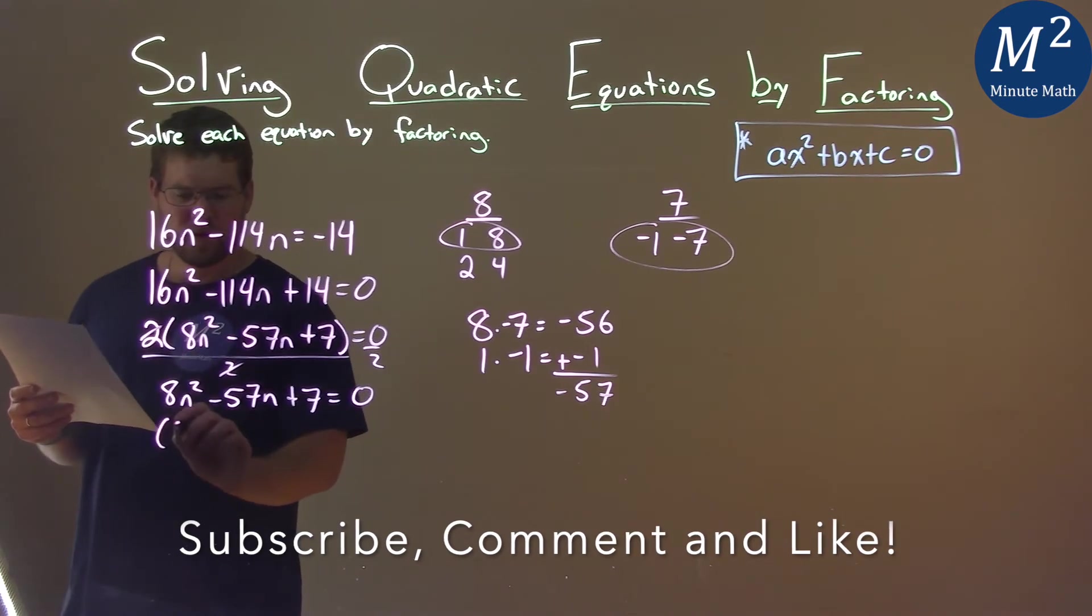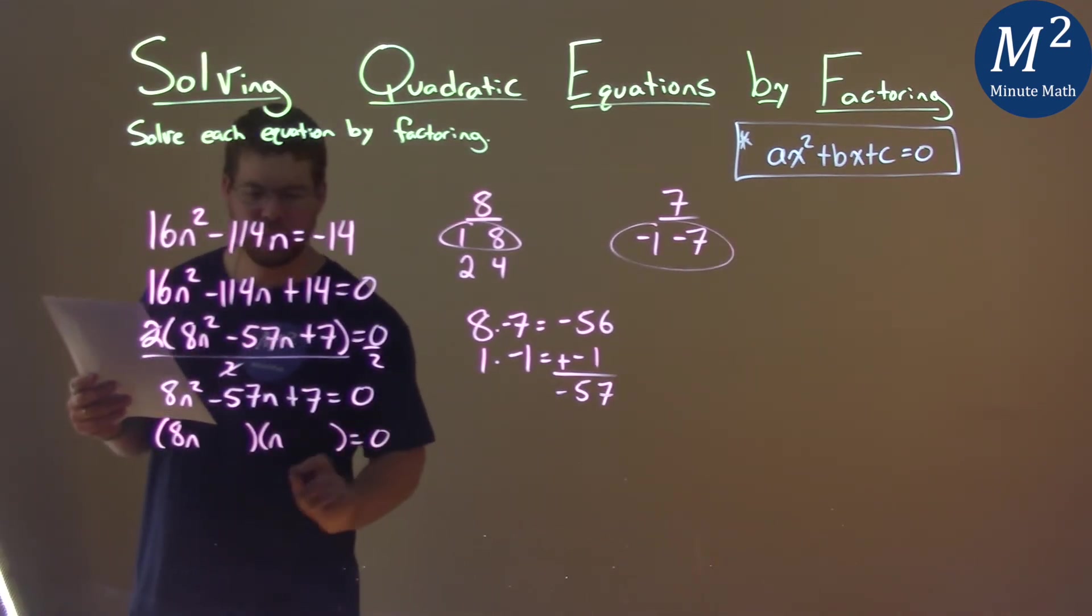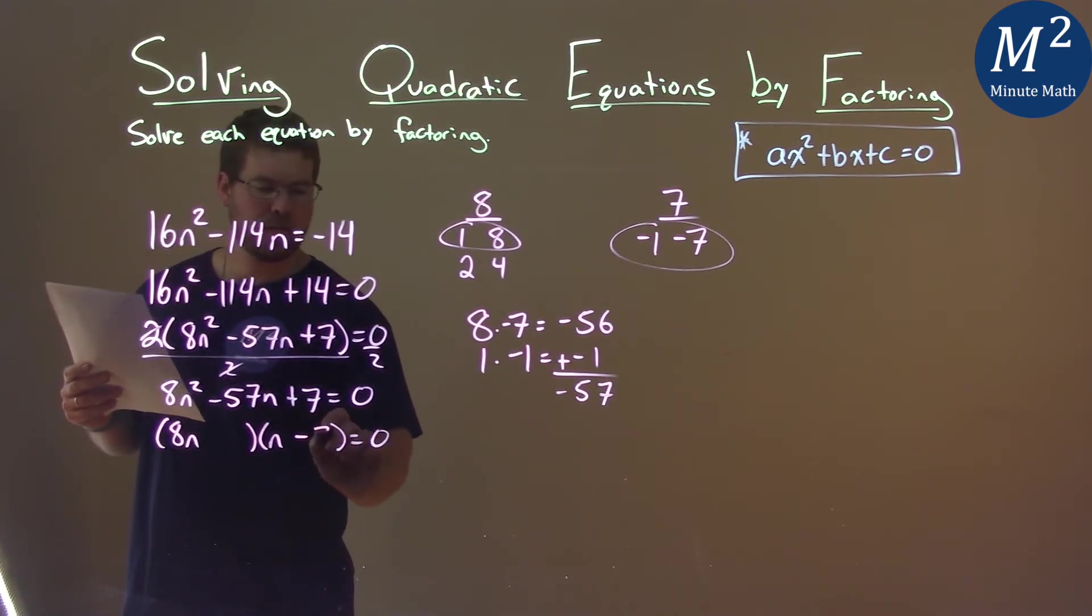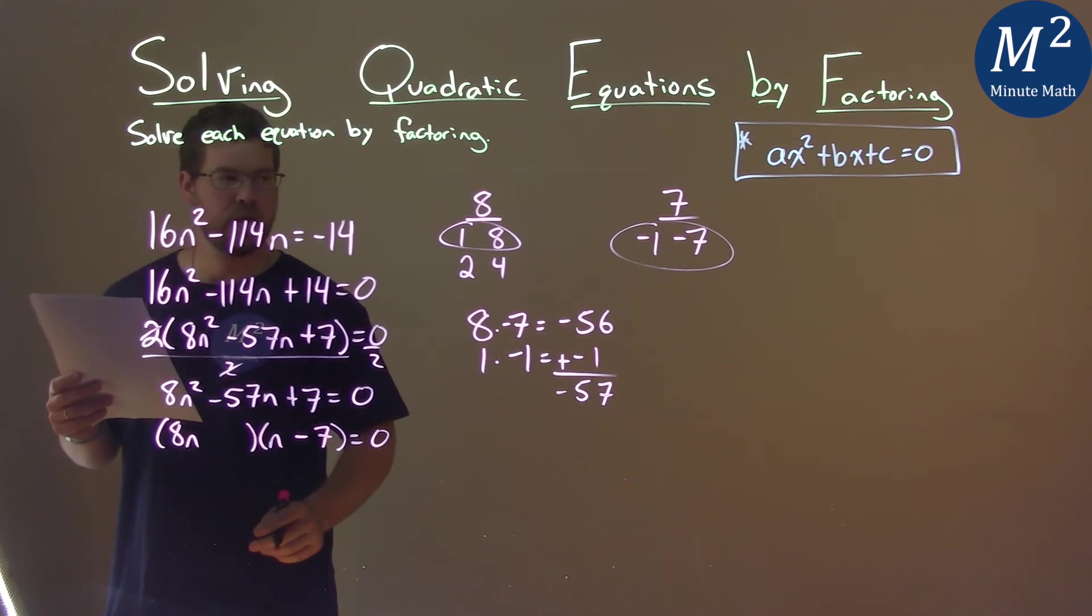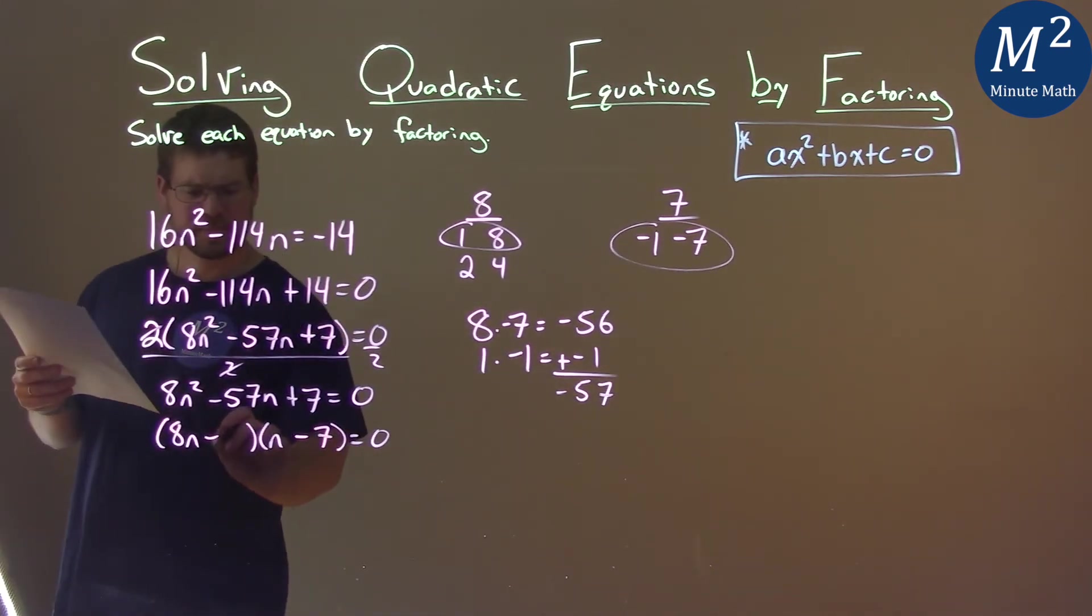So this has to be in the factored form of 8n and then n like this equal to 0. We said that 8n gets multiplied by negative 7, so I got to put that on the second parenthesis. The first parenthesis is minus 1.